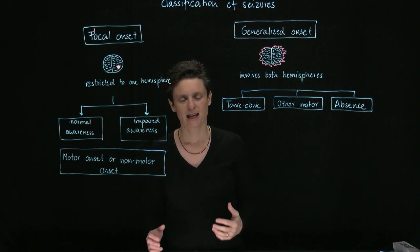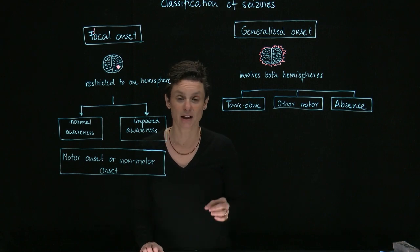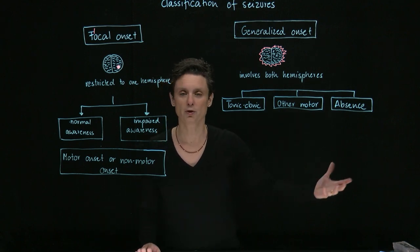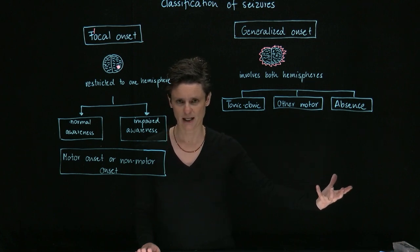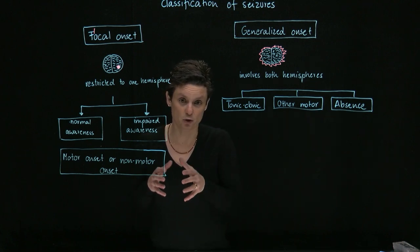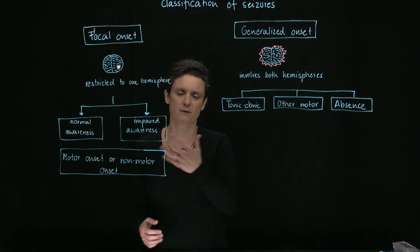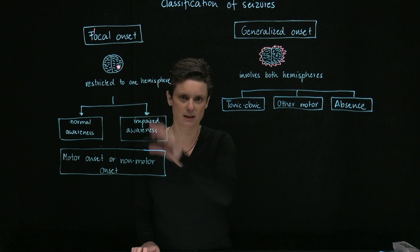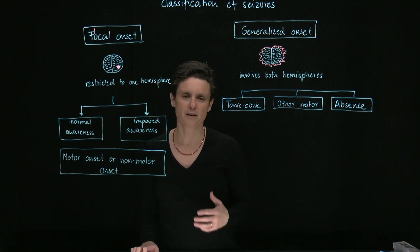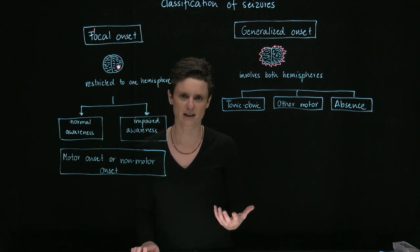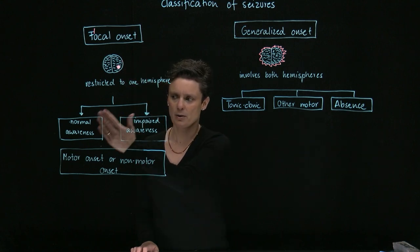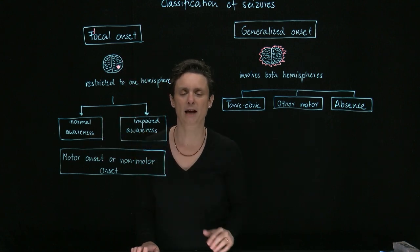So, for example, a patient that has a seizure in the left part of the frontal lobe would probably show some motor symptoms on the right side. So this would be restricted to the left frontal lobe, therefore this would be a focal onset seizure. Now next we distinguish within this focal onset seizure if the patient has normal consciousness or impaired consciousness. We call it focal onset seizure with normal awareness or with impaired awareness.